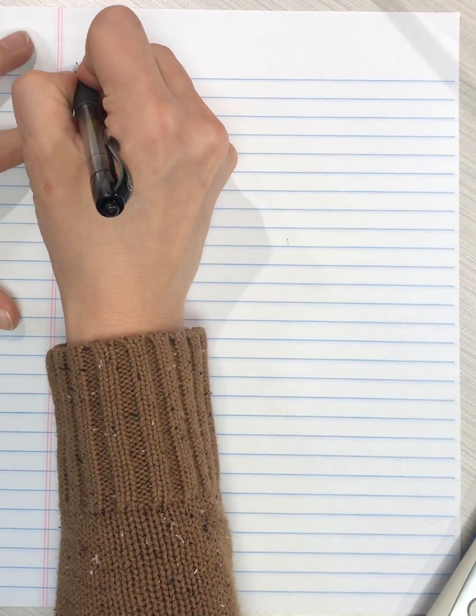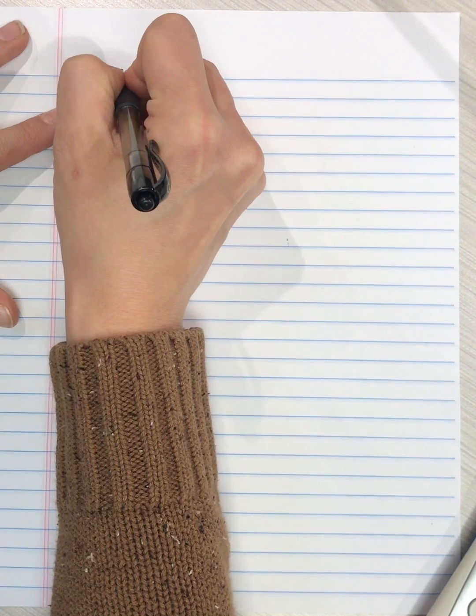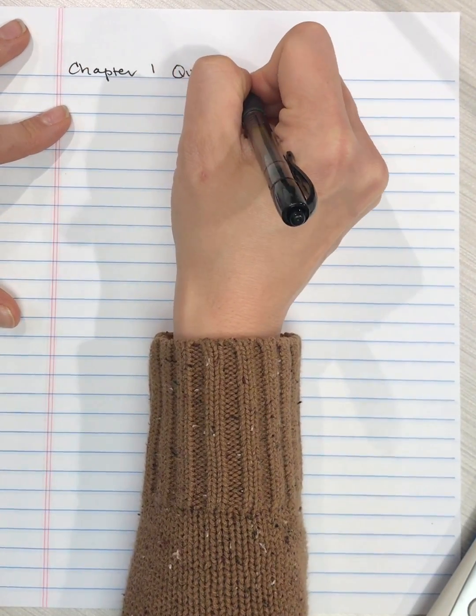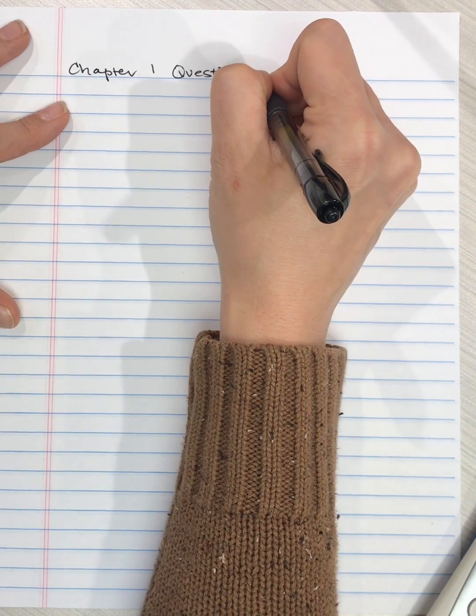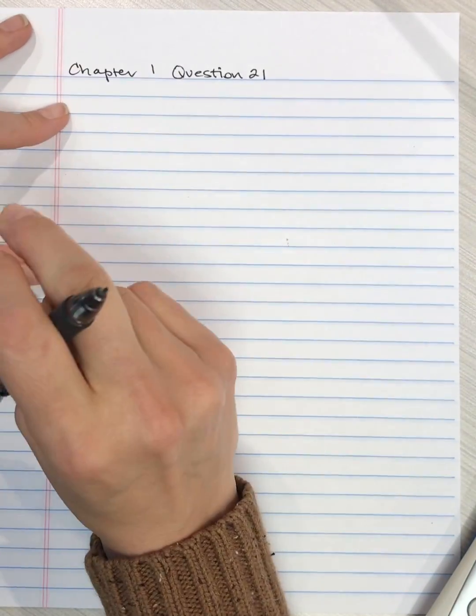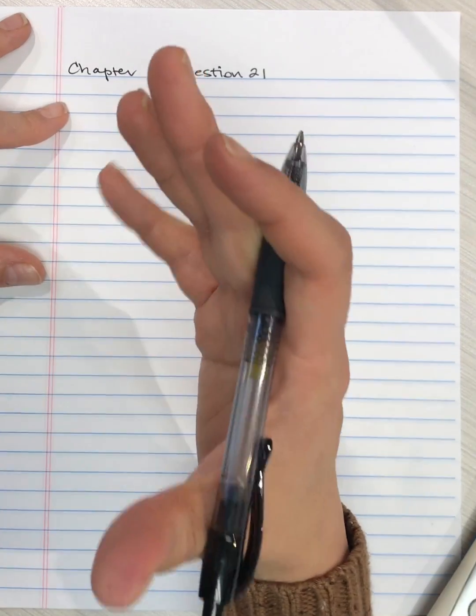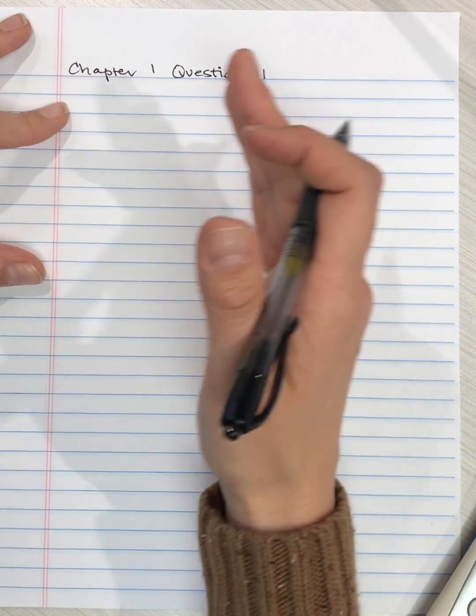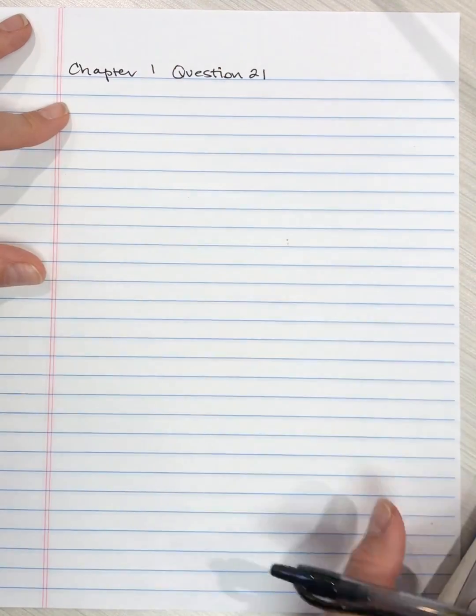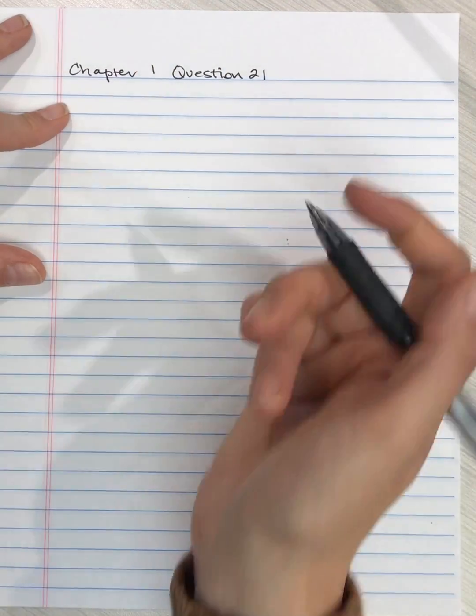So here I'm going to do chapter 1, question 21. This question looks a bit more complicated than some of the others because it has two variables. It has variable X and variable Y, but that doesn't inherently have to be problematic.